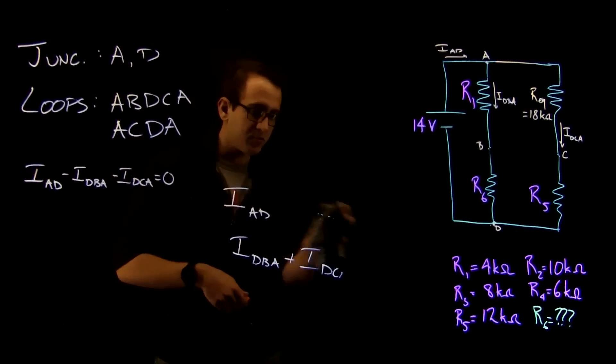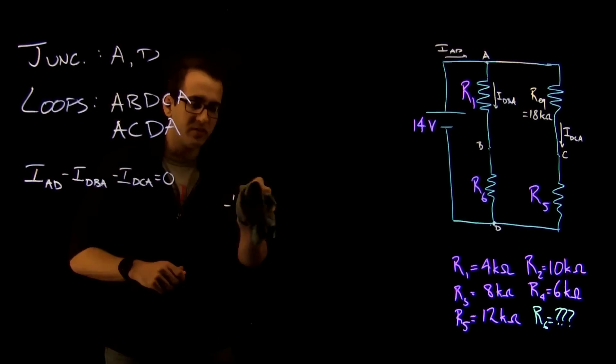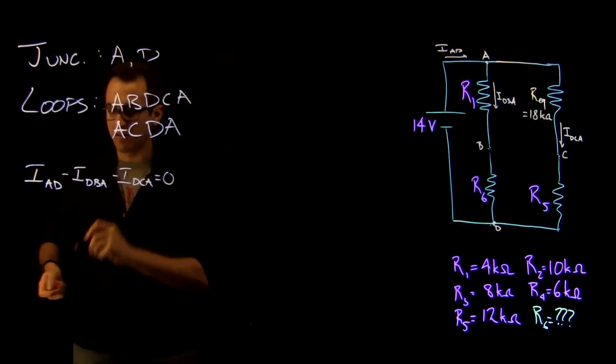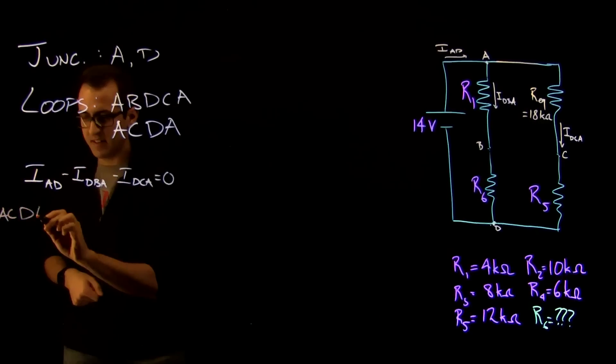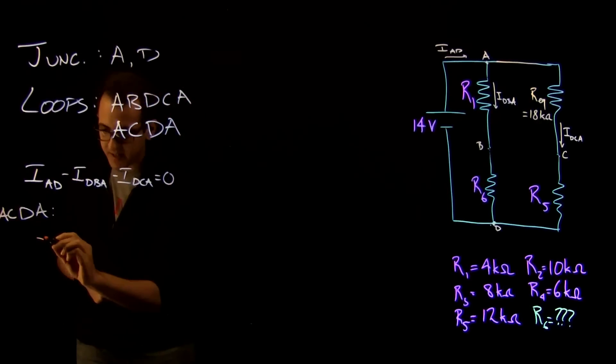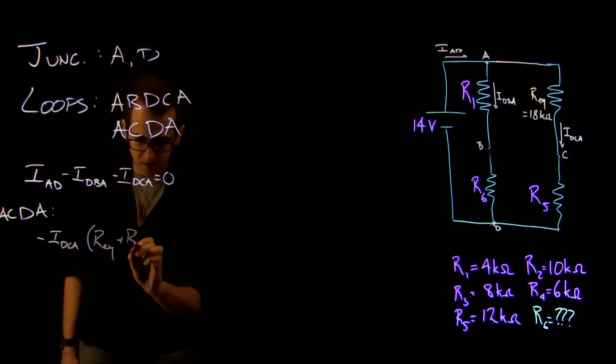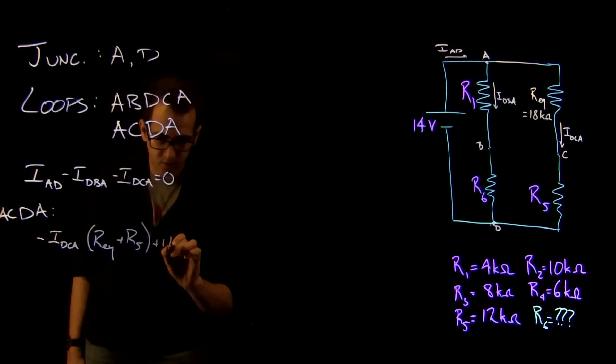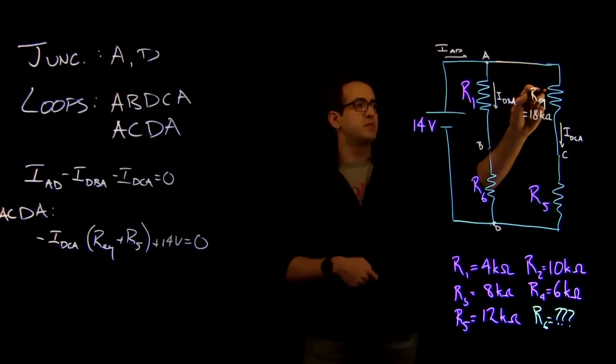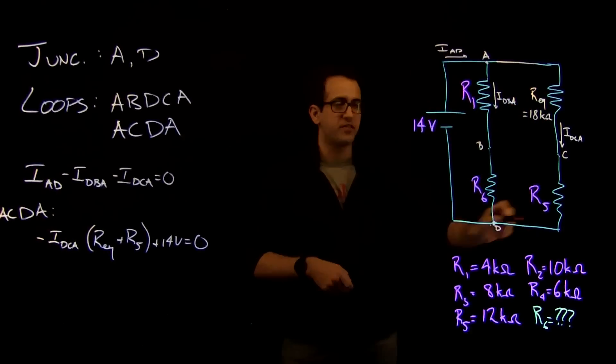The next thing we're going to do is we're going to write down the loop rules. So the first loop we're going to consider is ACDA. Our equation for ACDA is minus IDCA times REQ plus R5 plus 14 volts equals 0. So that's the voltage drop around the outer loop is 0.